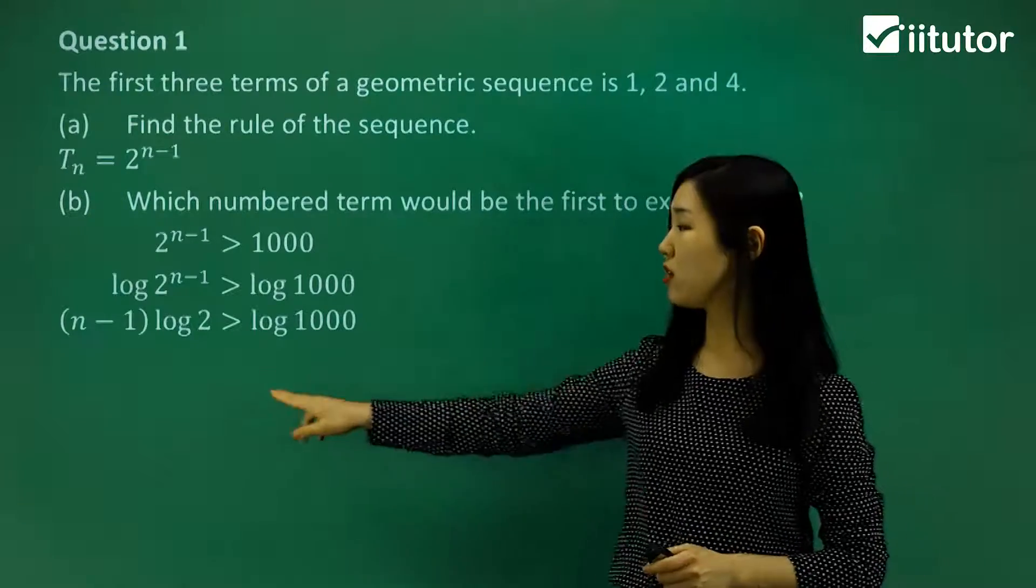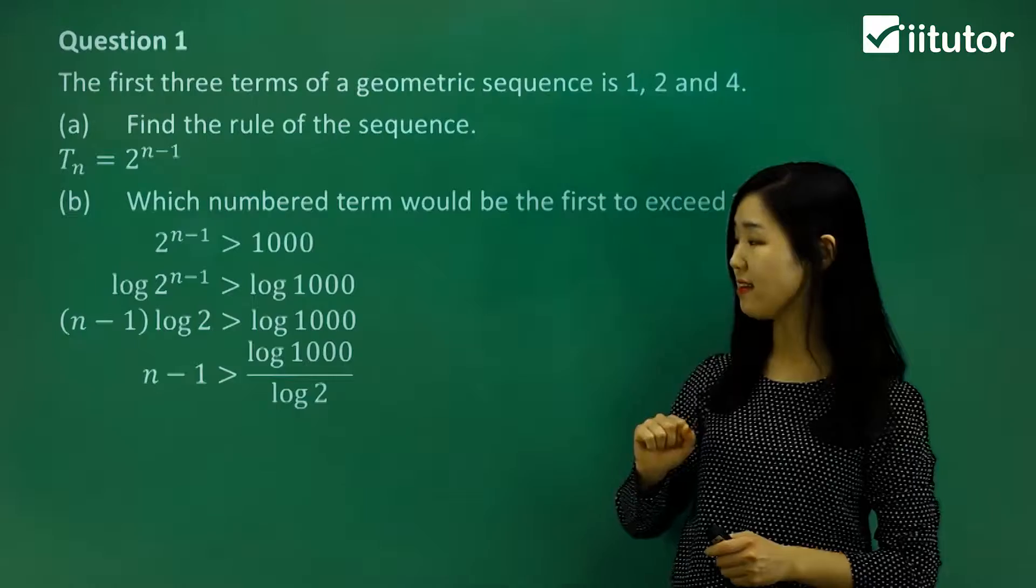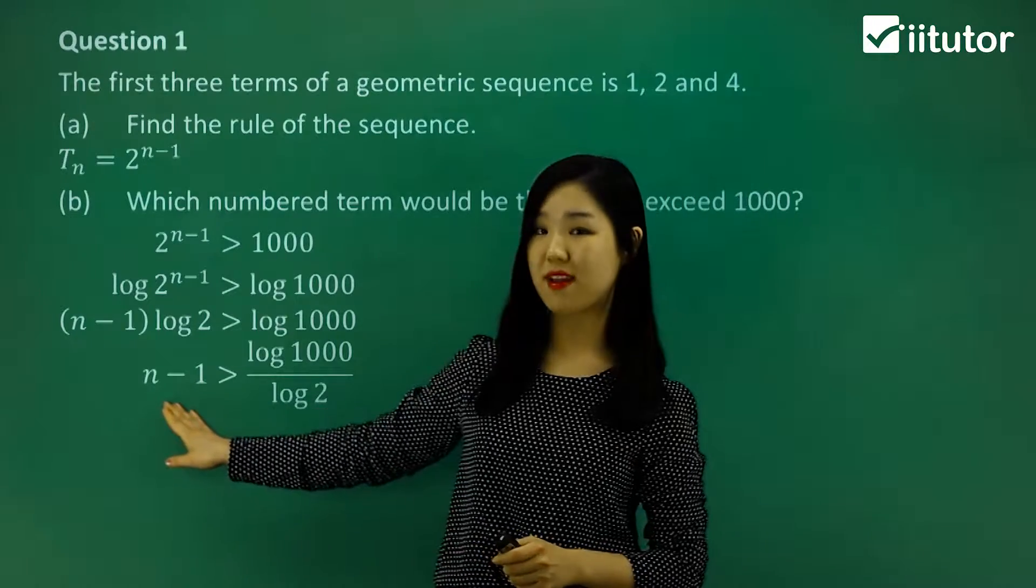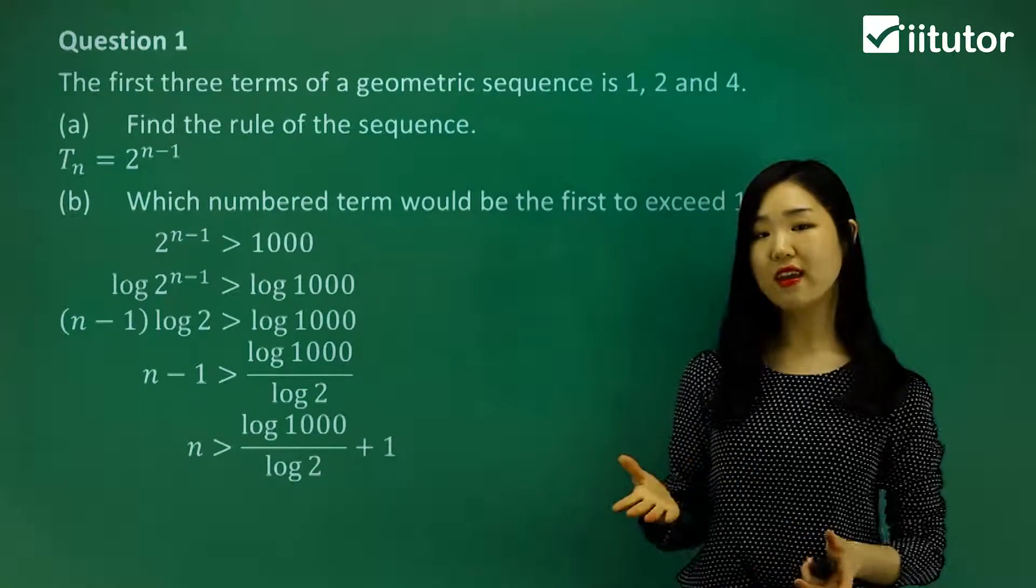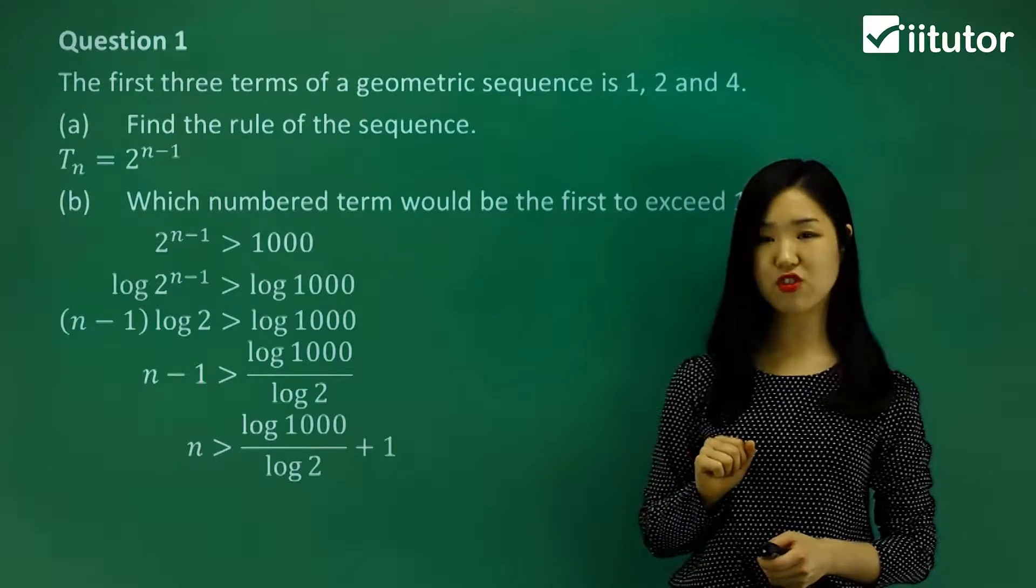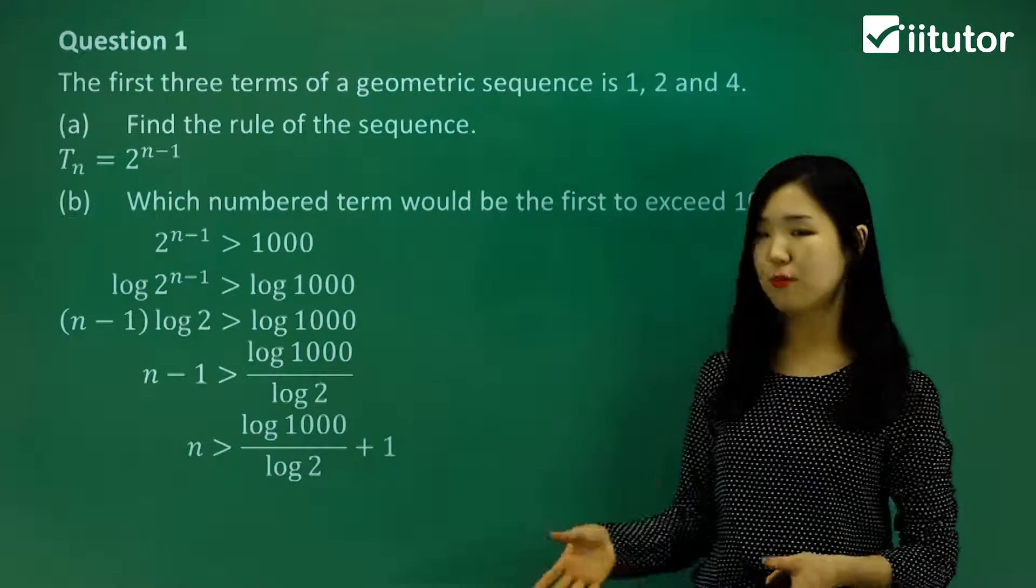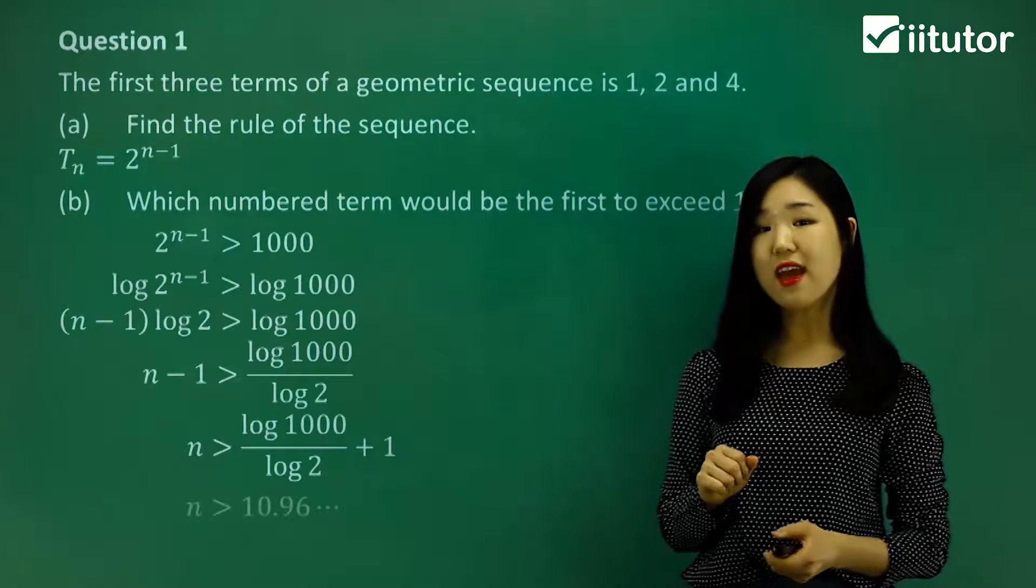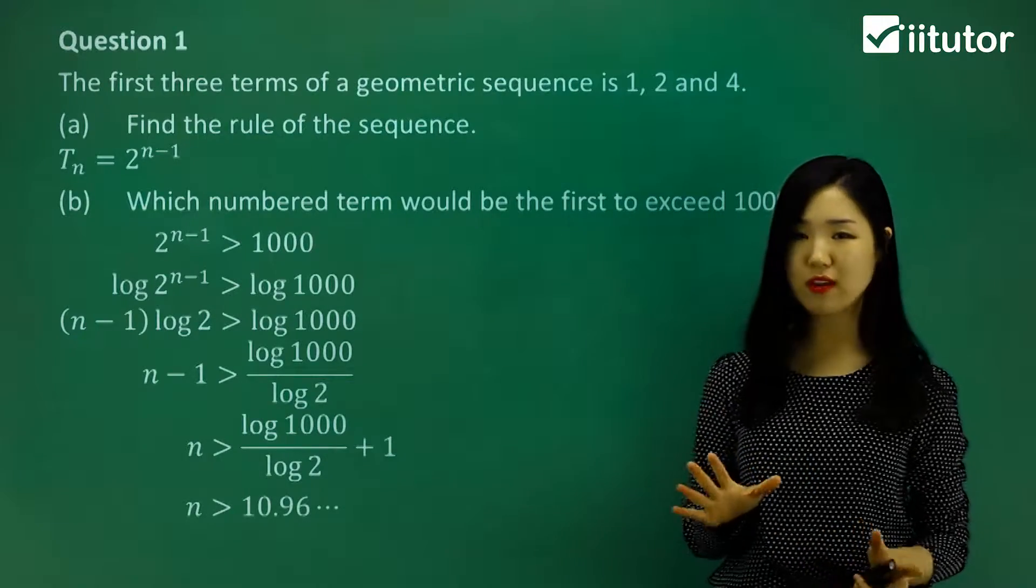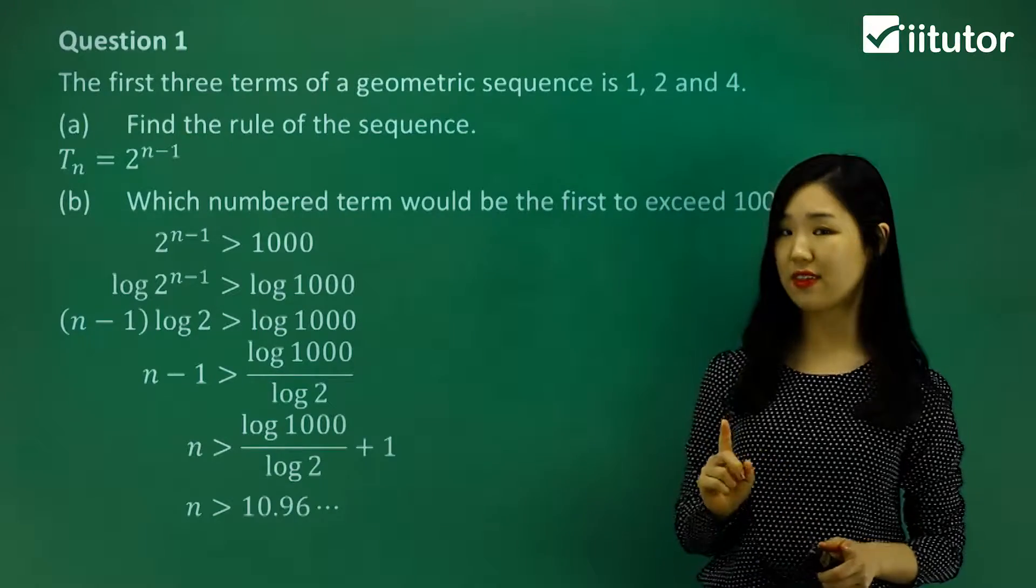And what I'm going to do, the log 2, because it's just a constant, I'm going to divide it over to the other side like that. And you can see that I've only got the n minus 1 left. So to make n the subject, I can just add 1 over to the other side. And you can just put that directly into your calculator. Put the log using your log button in your calculator, and don't forget to plus 1 at the end. You'll get a value of 10.96 something.